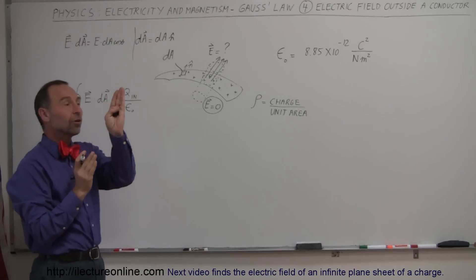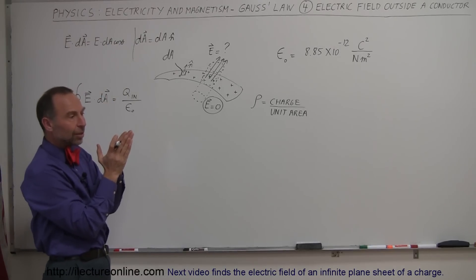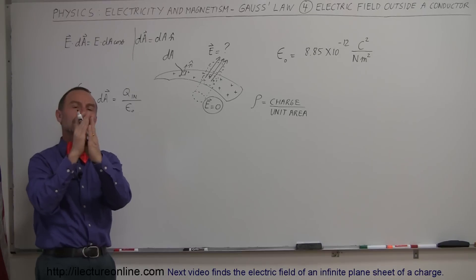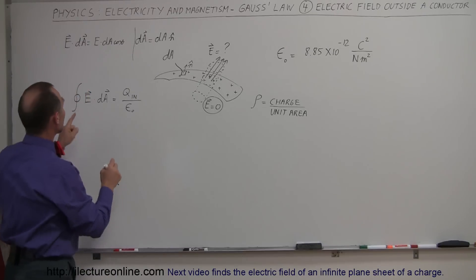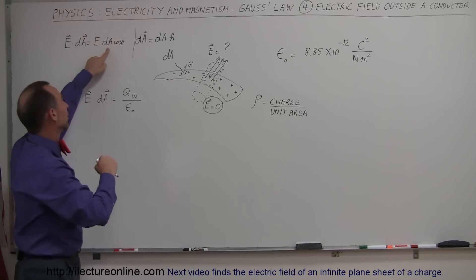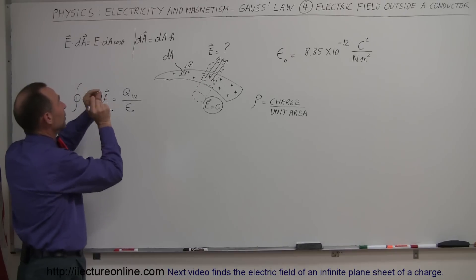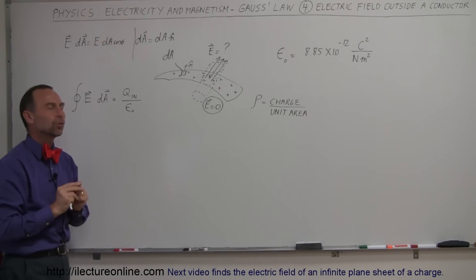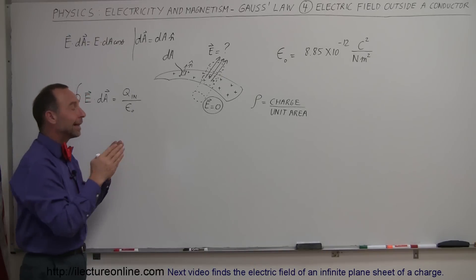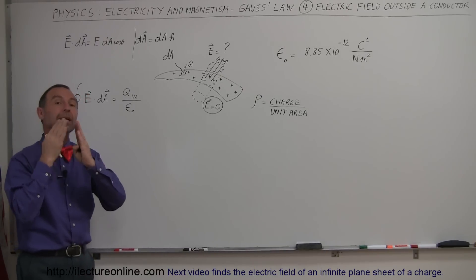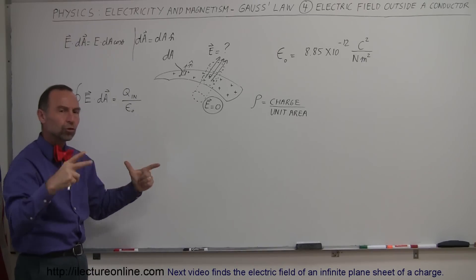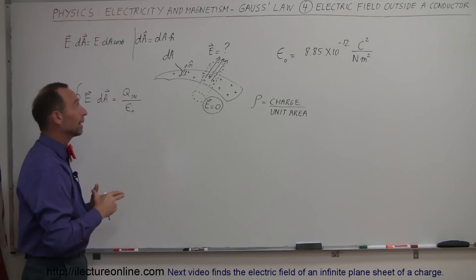If the direction of E and the perpendicular vector to the surface are not parallel to each other, there'll be an angle between them, and we have to multiply the magnitude of E times the magnitude of dA times the cosine of that angle. Usually with Gauss's law, the angle between the electric field and the perpendicular to the surface is equal to zero — and if we draw the Gaussian surface correctly, that is usually the case, which makes the problem much easier.